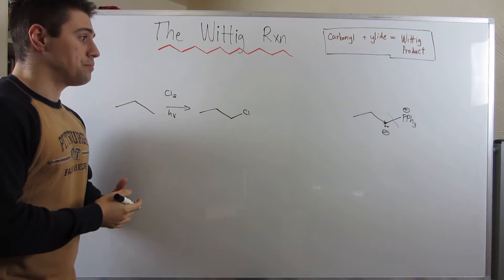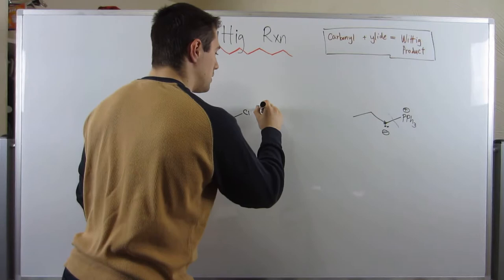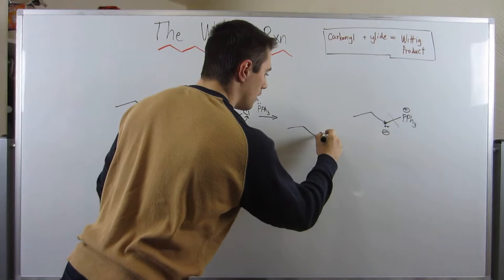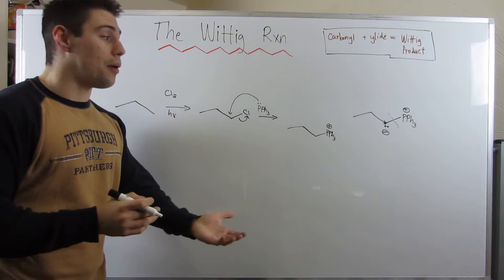Now, what we need to do is we need to perform SN2, and we need to actually stick on our PPh3, our triphenylphosphine. All right, so PPh3, he is a good nucleophile. He's going to swing in, attack, backside, and chlorine will leave. And what that does is by donating that electron pair, phosphorus gets his positive charge, because he kind of gave a lone pair away, and now he's a part of a bond, so he loses one of his electrons in his formal charge calculation.